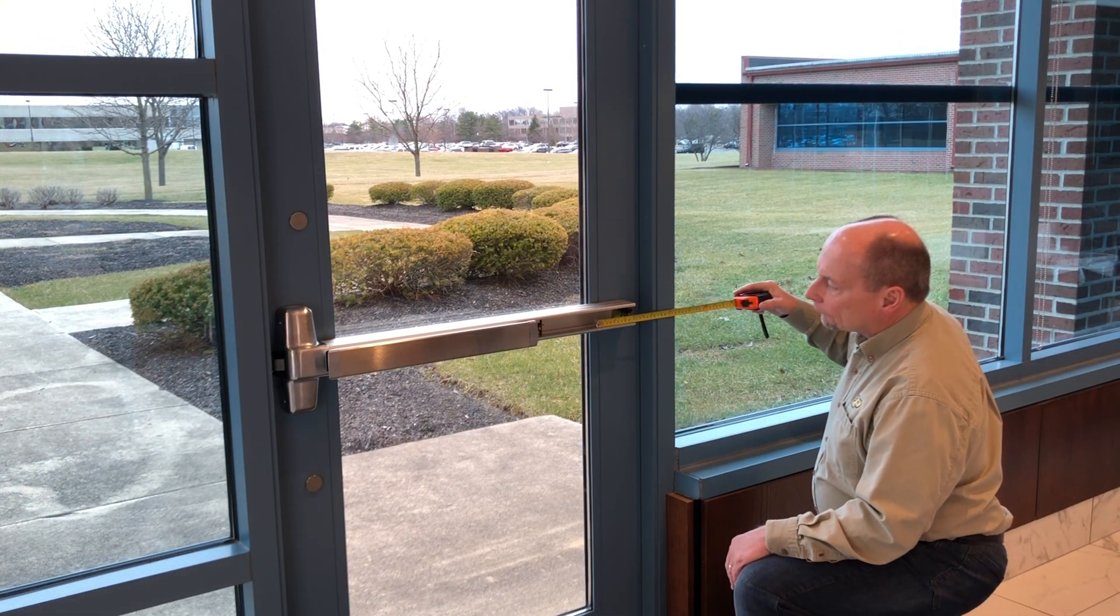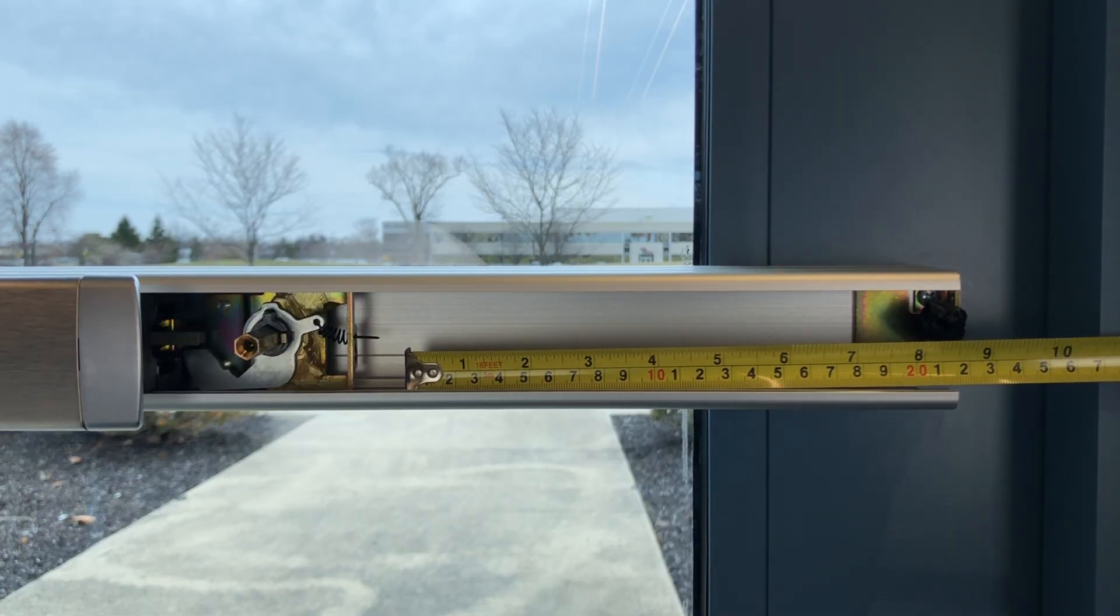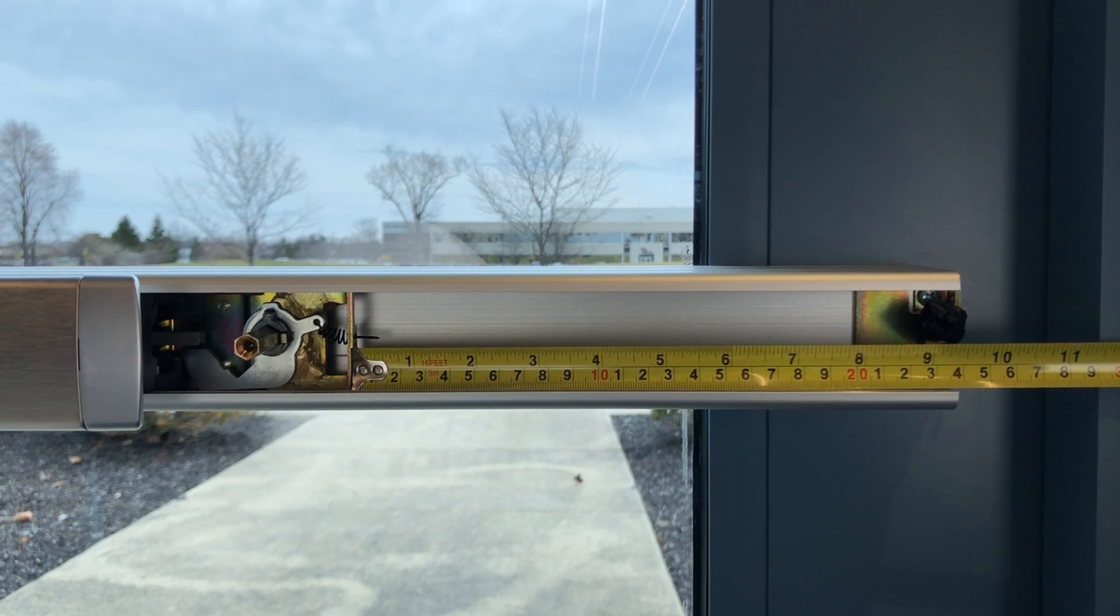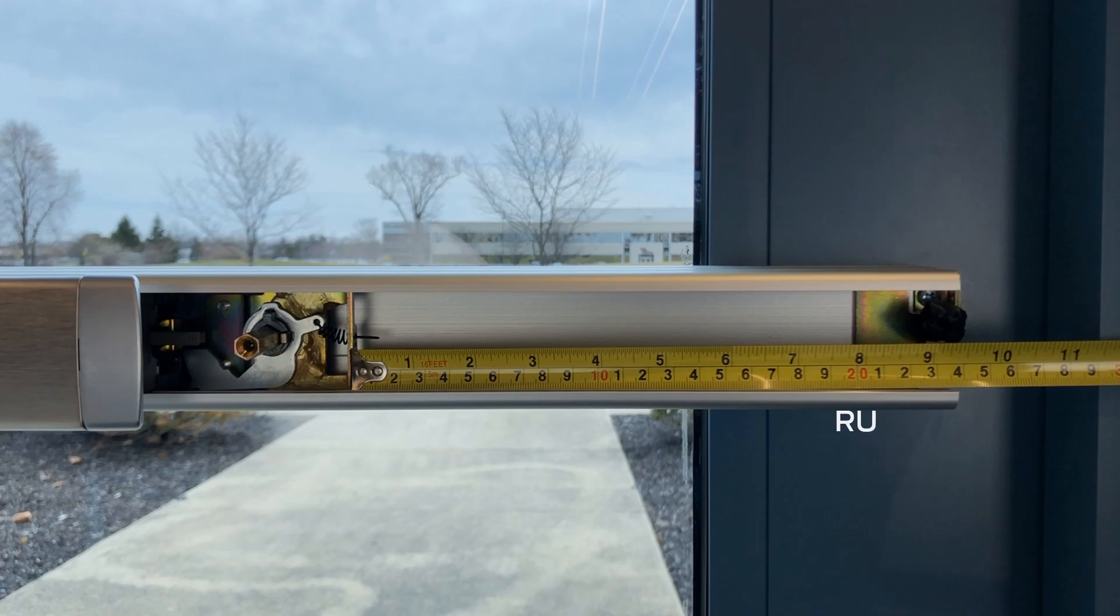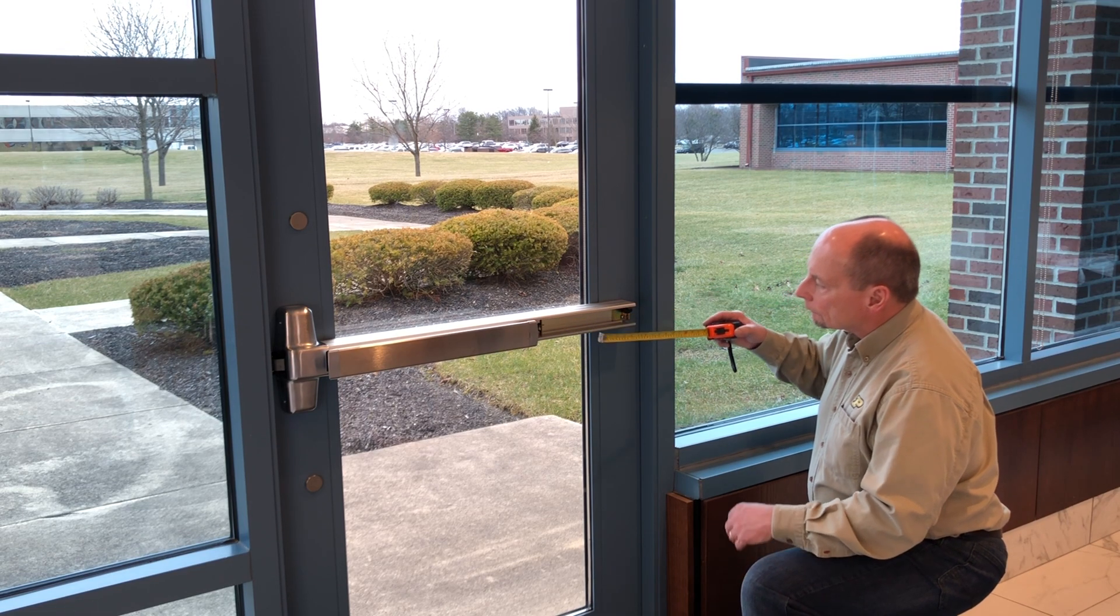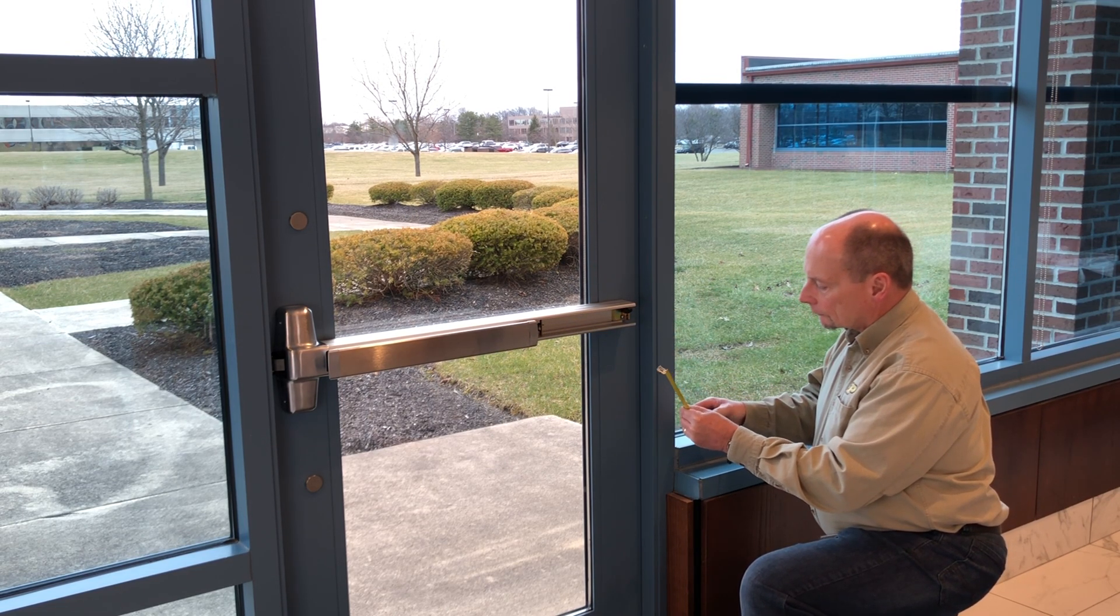Using the tape measure, check the distance from the last active component to the end of the mechanism case. For the remote undogging module, 8 and 1 quarter inches of space is required. For the remote monitoring module, 7 inches is required. If there is not enough space for your module, contact your door hardware supplier or customer care.